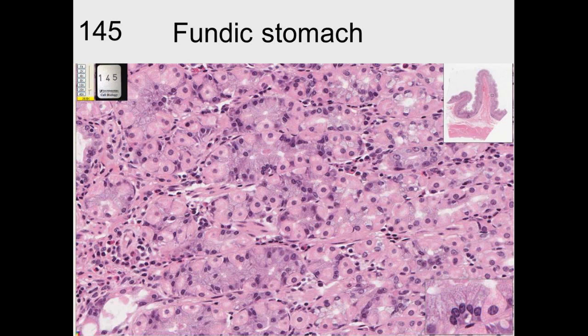And if you look inside there, you can see some big cells, light staining cytoplasm, and a spherical nucleus. And those are the parietal cells.